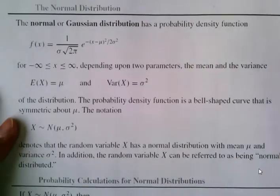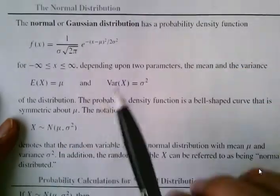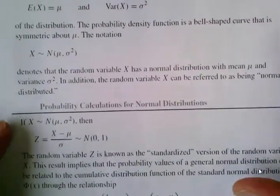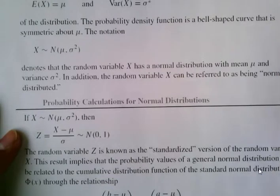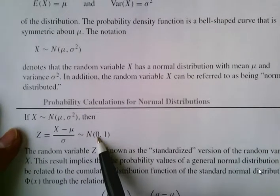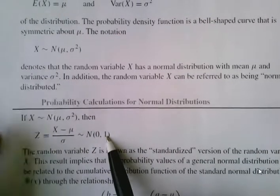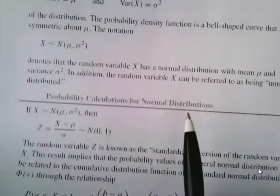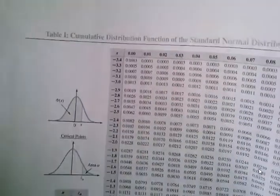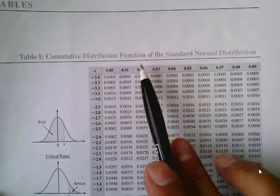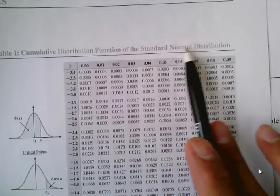As we discussed in class, it is not that simple to work with this type of function, so we have what we call the standard normal distribution, for which mu is zero and sigma equals one. In the textbook on page 787, we have a table that contains the cumulative distribution function of the standard normal distribution.